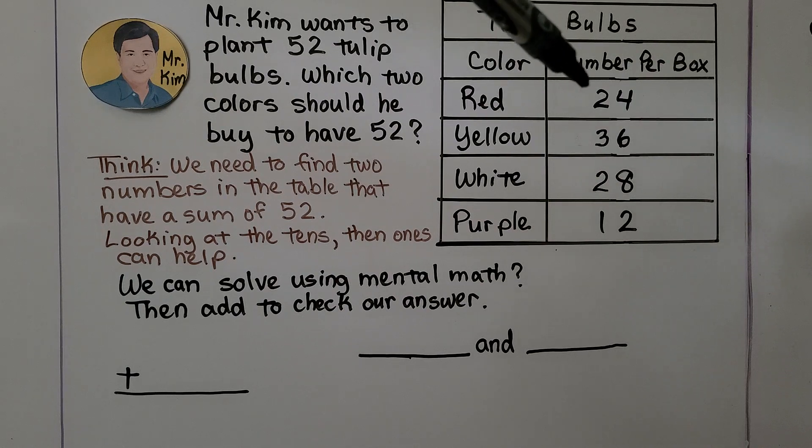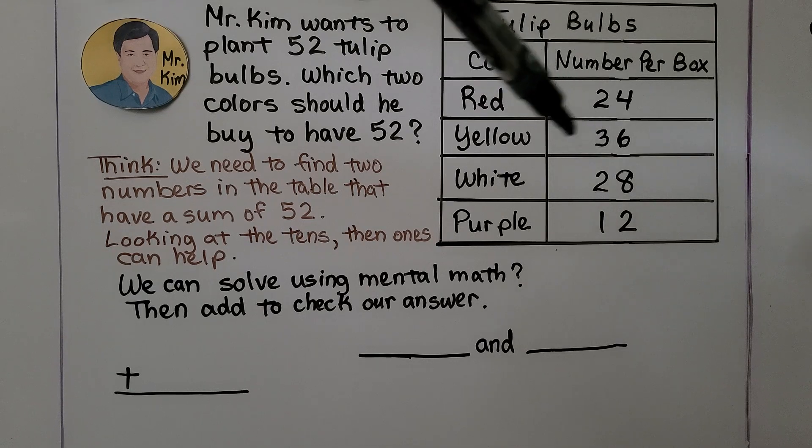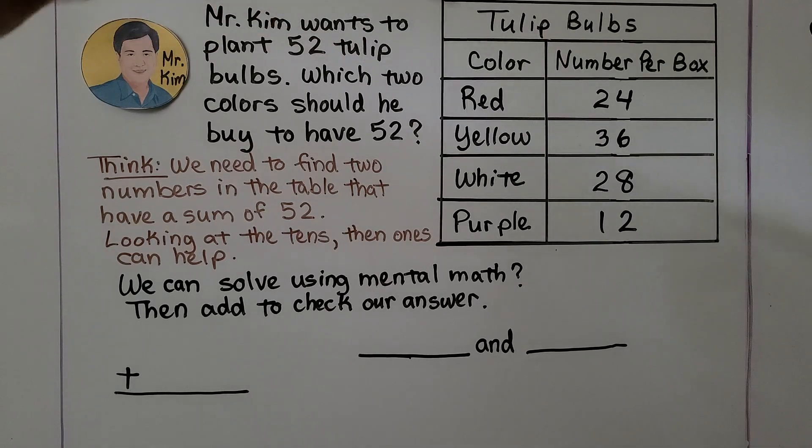That means there are 24 tulip bulbs that are red in a box. There are 36 yellow in a box, 28 white in a box, and 12 purple in a box.